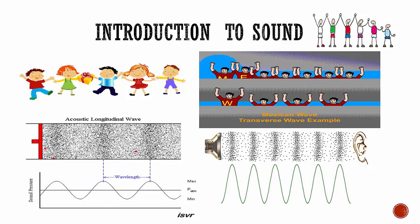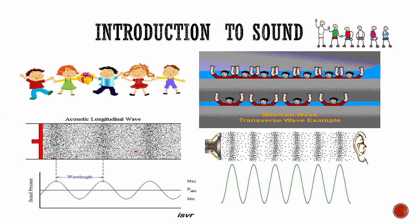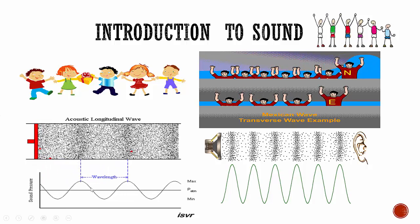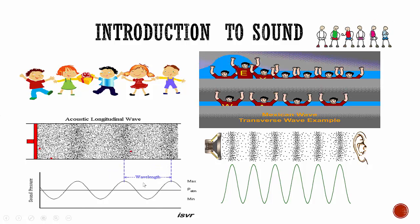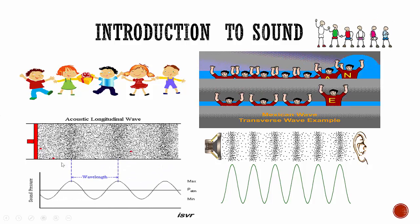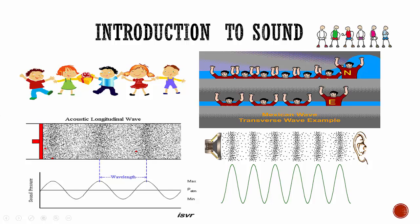The areas where the air molecules are pushed together are called compressions. The areas where the air molecules are more spread out are known as rarefactions. The distance from one high point to another high point is known as wavelength. So this is how sound travels through air molecules, making compressions and rarefactions.